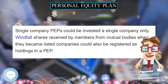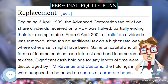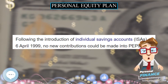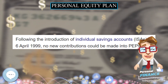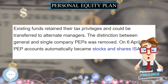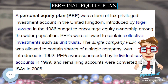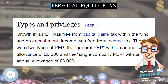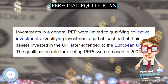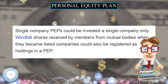Significant cash holdings for any length of time were discouraged by HM Revenue and Customs; the holdings in a PEP were supposed to be based on shares or corporate bonds. Following the introduction of individual savings accounts on 6 April 1999, no new contributions could be made into PEPs. Existing funds retained their tax privileges and could be transferred to alternate managers. The distinction between general and single company PEPs was removed. On 6 April 2008, PEP accounts automatically became stocks and shares ISAs.